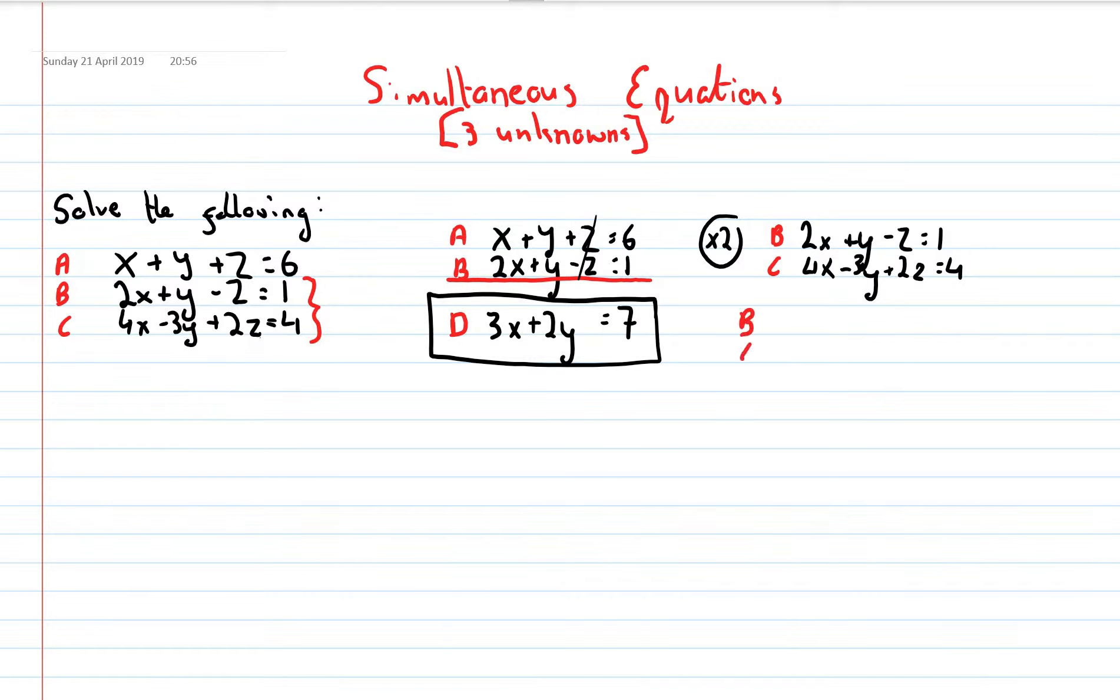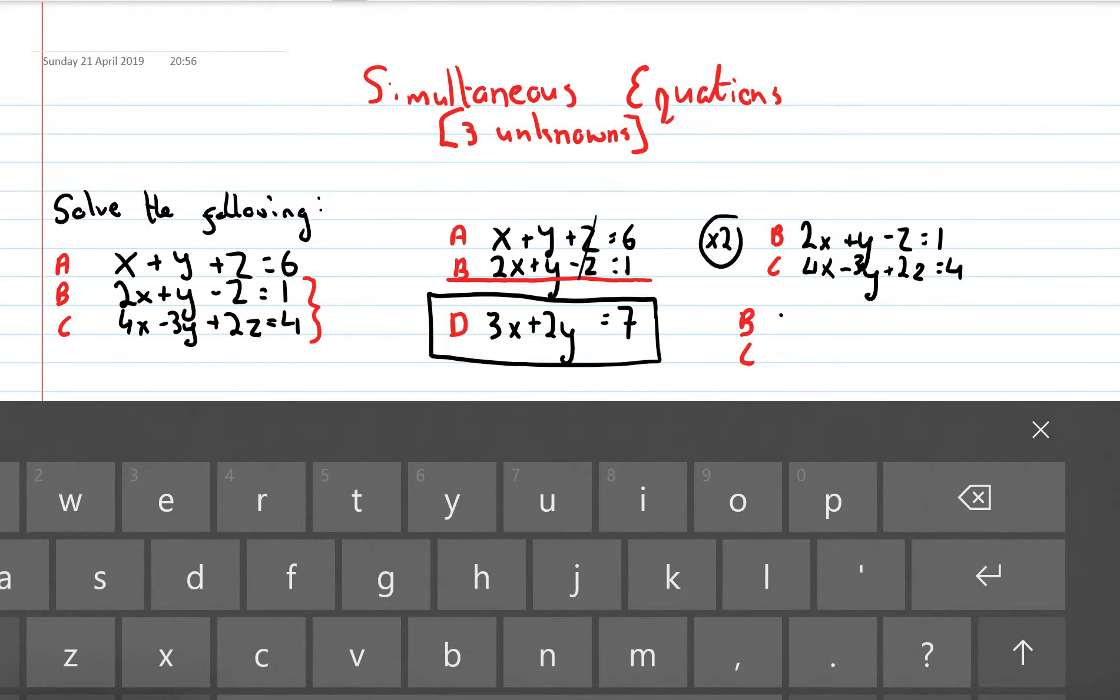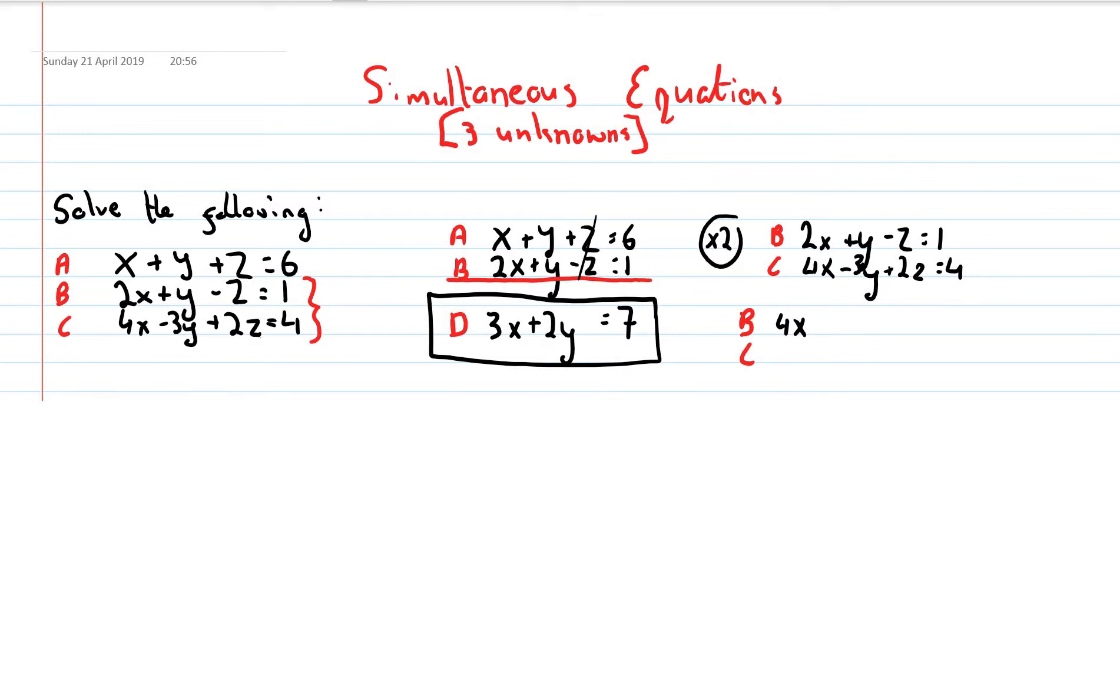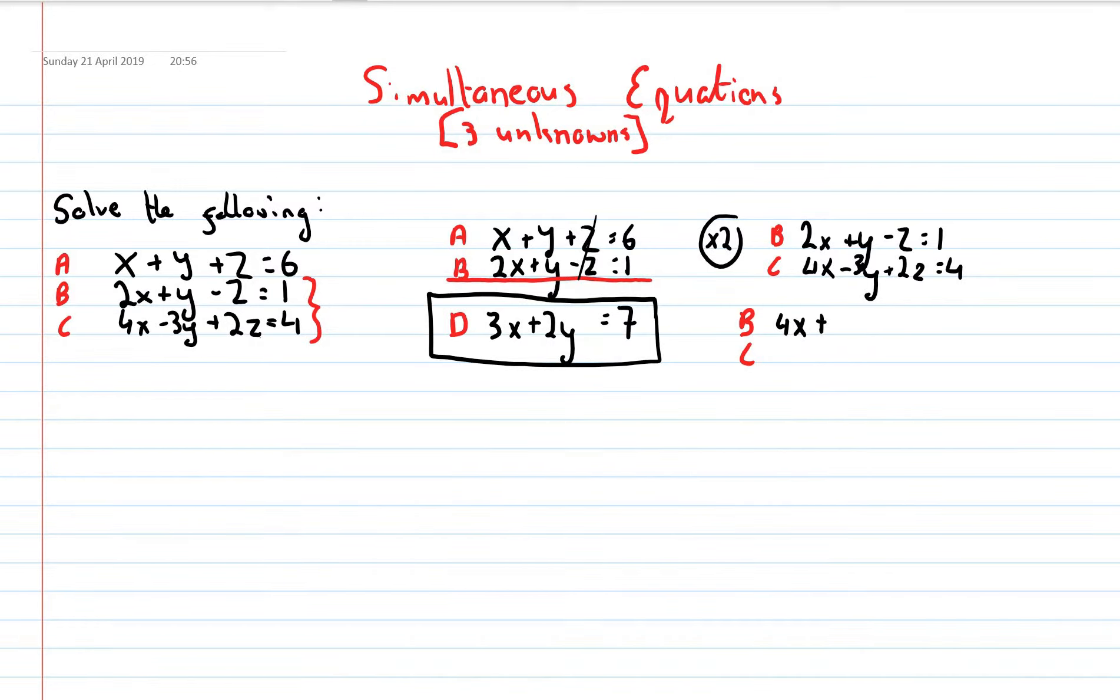I'll redo my B, and that would be 2x multiplied by 2 is 4x plus 2y minus 2z equals 2. And the bottom line will stay the same, 4x minus 3y plus 2z equals 4. Now, I have my positive and negative pair, so I can add vertically, and this will give me E.